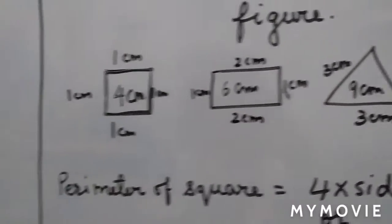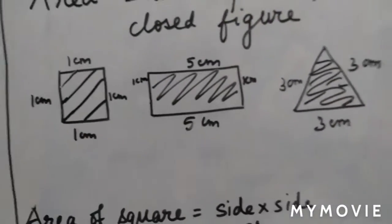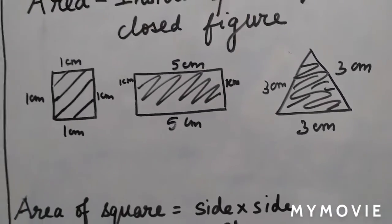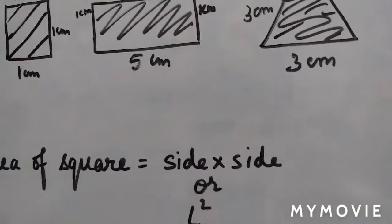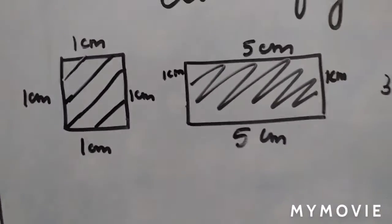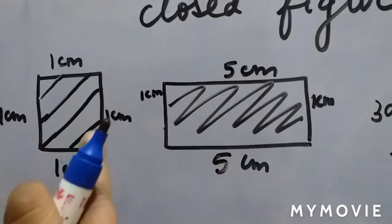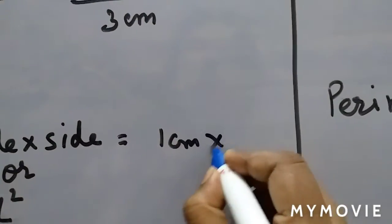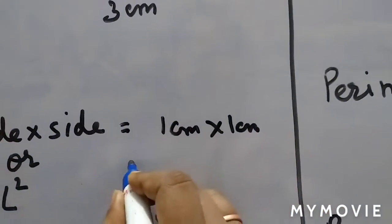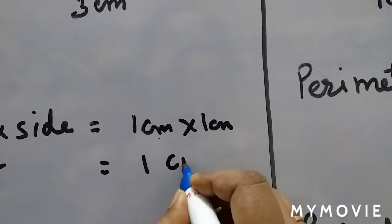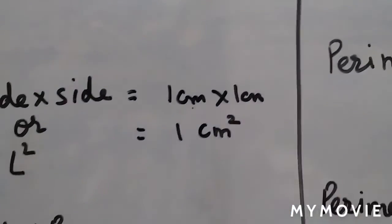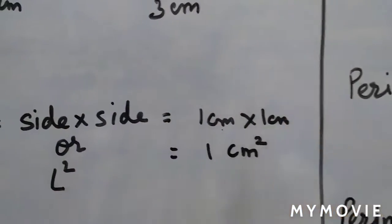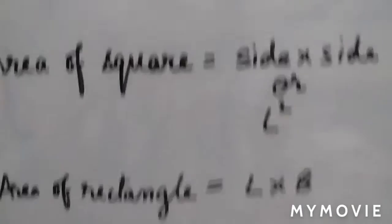We have made formulas so that you can easily get the answers. We will write the area of square as side into side. Now this is a square with 1 cm by 1 cm, so side into side means 1 cm into 1 cm. 1 into 1 will be 1, and cm into cm we will write cm². Two times multiplied.